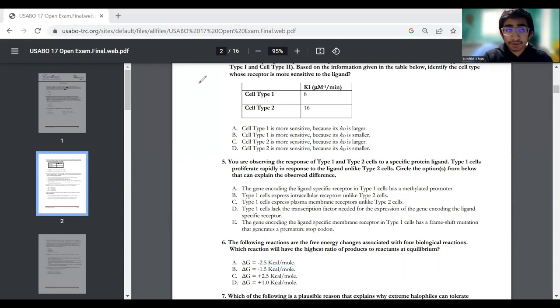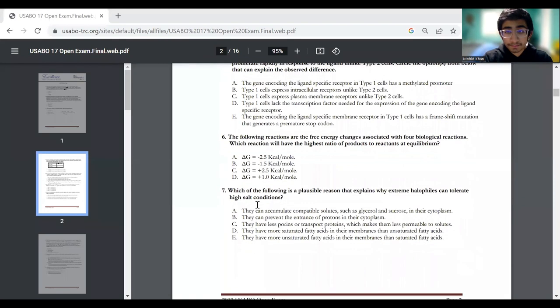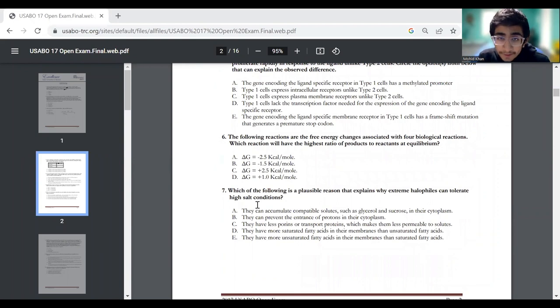Question number seven. Which of the following is a plausible reason that explains why extreme halophiles can tolerate high salt conditions? We have they can accumulate compatible solutes such as glycerol and sucrose, they can prevent the entrance of protons, they have less porins or transfer proteins, they have more saturated fatty acids, and they have more unsaturated fatty acids.